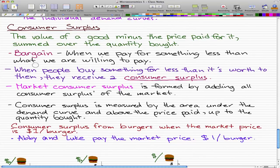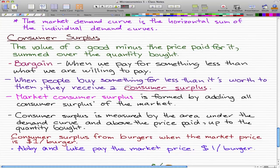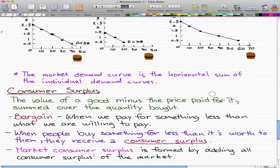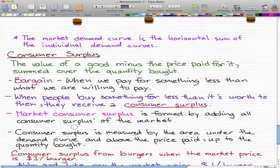Market consumer surplus is formed by adding all consumer surpluses of the market. That's similar to what we did before where we added individual demands to get market demand. That's the idea for market consumer surplus.